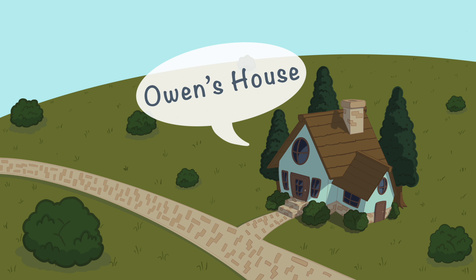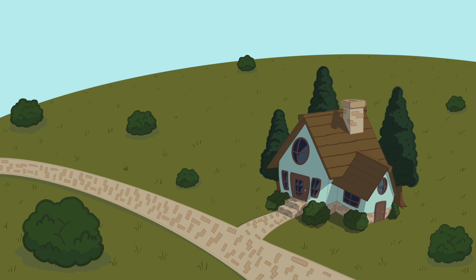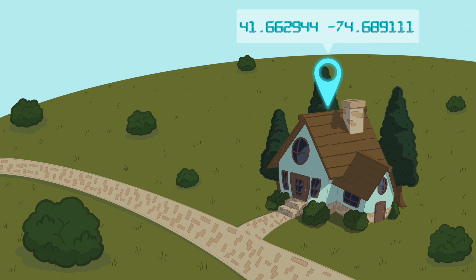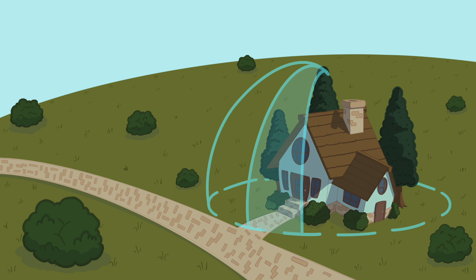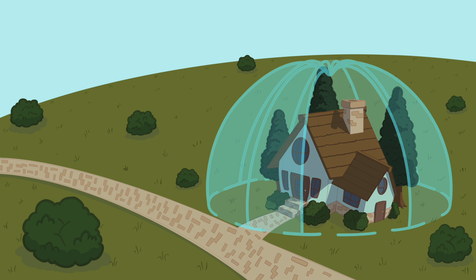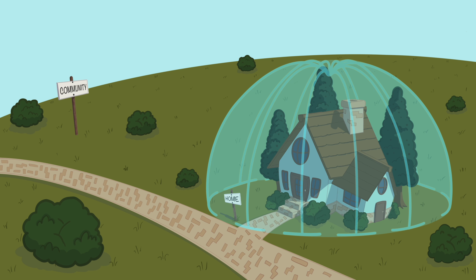Let's talk about how eTime will determine home versus community. It starts with the location of the participant's home. Because ISS already knows the home address for its participants, we can use publicly available data to retrieve the latitude and longitude of the home. Using that information, we draw a geofence around Owen's home's location. This really just means that we create a virtual circle of space around the home. Anything inside that circle is assumed to be home, and anything outside of that circle is assumed to be community.